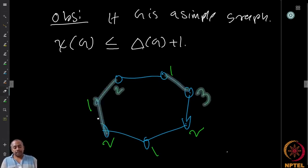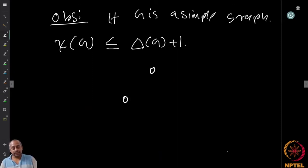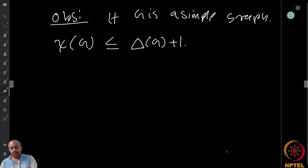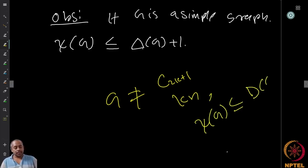The other graph requiring Δ + 1 colors is the complete graph K_n. Every vertex in K_n must get a different color since all are adjacent. The degree of each vertex is n − 1, so Δ = n − 1, but we need n colors — exactly Δ + 1.